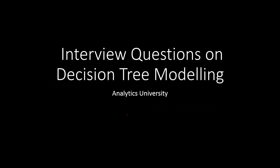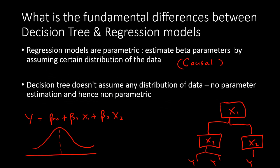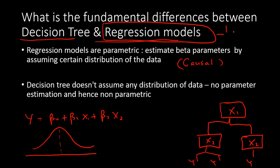In this video I am going to discuss a few important questions often asked in interviews on decision tree modeling. Decision tree is a type of tree model that you can use for predicting the target variable, and you can use that for regression as well as for classification problems. A common interview question is: what is the fundamental difference between a decision tree and regression, since you can use linear regression or logistic regression to solve the same problem?